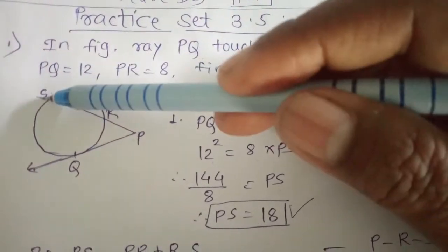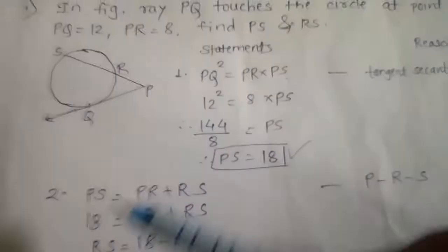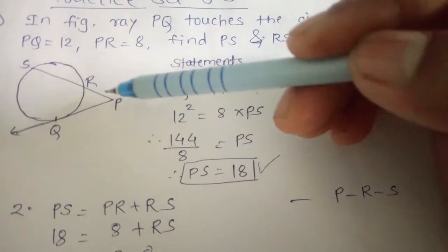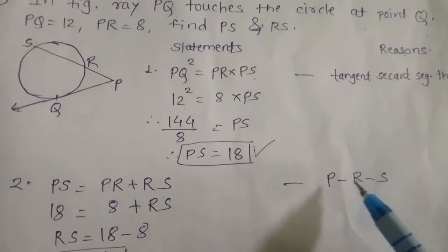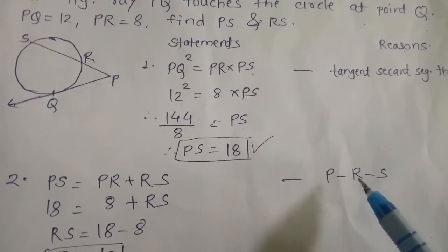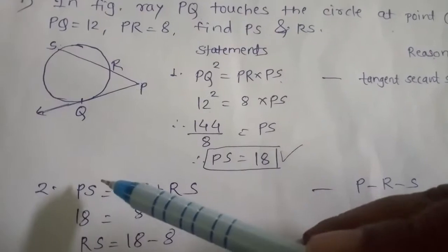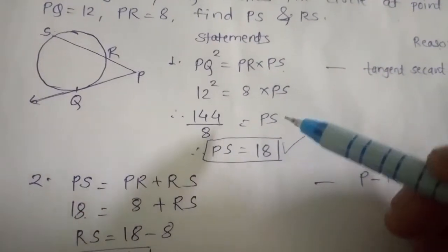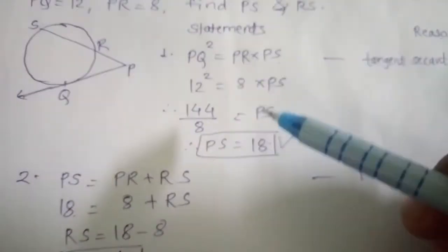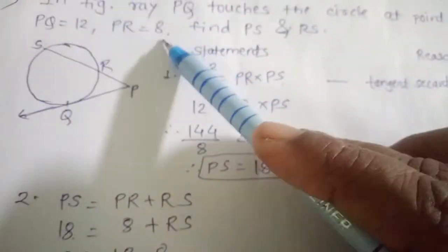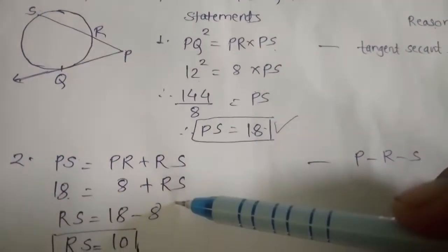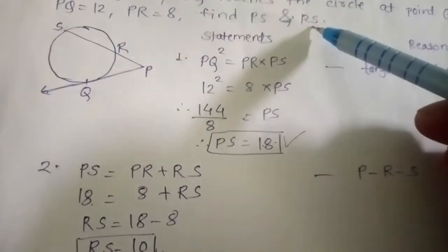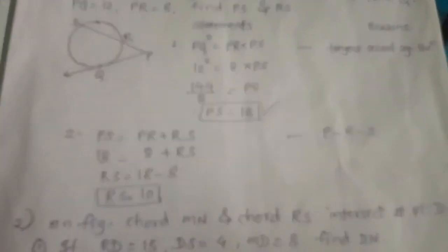Point R is in between P and S, so we write P–R–S. PS is 18 and PR is 8. So PS = PR + RS, which gives RS = 18 − 8 = 10. In this way we find PS = 18 and RS = 10.